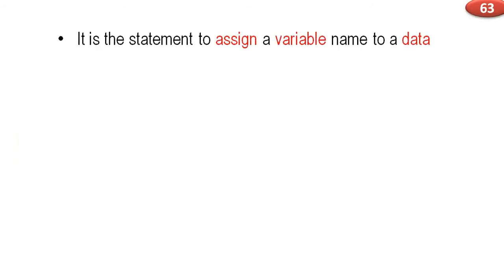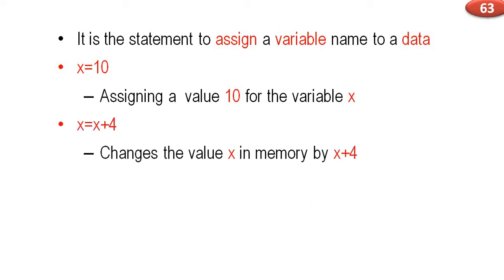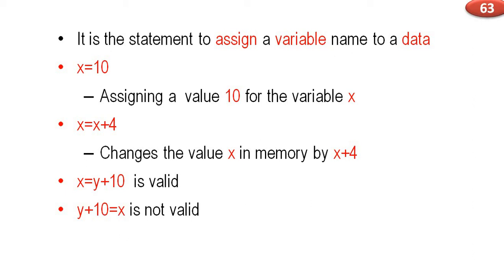Next, assignment statement. An assignment statement assigns a variable name to a data value. For example, x = 10 assigns the value 10 to variable x. x = x + 4 changes the value of x in memory by x plus 4 — if x is initially 10, the end value is 14. x = y + 10 is a valid statement; if y is 10, then x gets the value 20. However, y + 10 = x is not a valid statement.